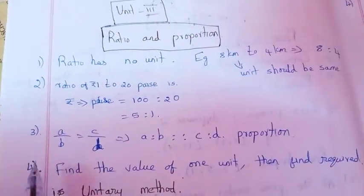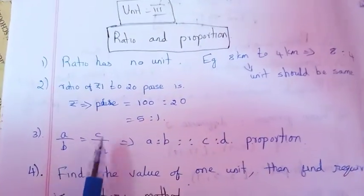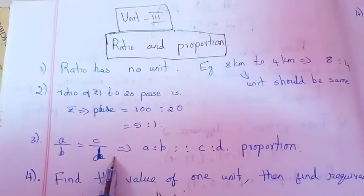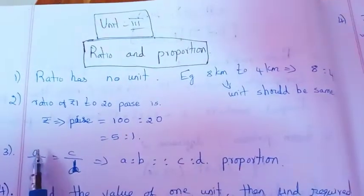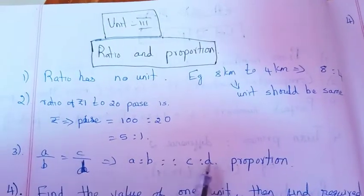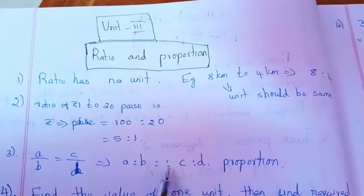What you see is a by b equals c by d. If we have a ratio formula, this is A is to B and C is to D. So, the two are in proportion.